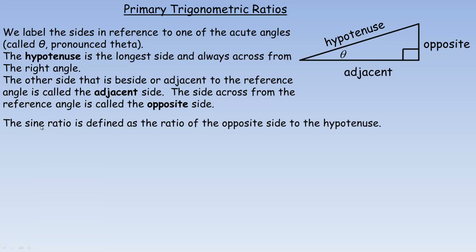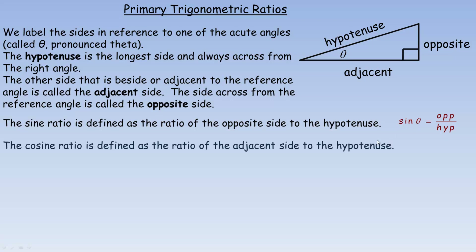The sine ratio — spelled S-I-N-E, abbreviated S-I-N — is defined as the ratio of the opposite side to the hypotenuse. The cosine ratio is defined as the ratio of the length of the adjacent side to the hypotenuse, so we write cos theta equals adjacent over hypotenuse. Those are the normal abbreviations. If you look at any scientific calculator, you'll see S-I-N somewhere on it.